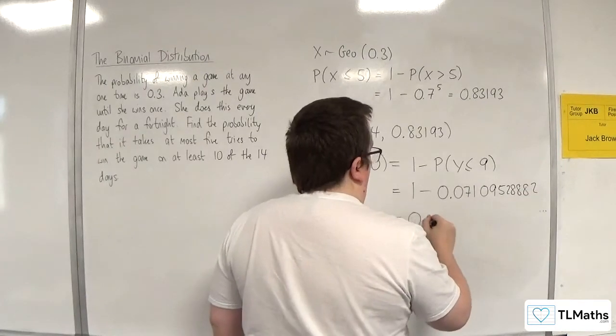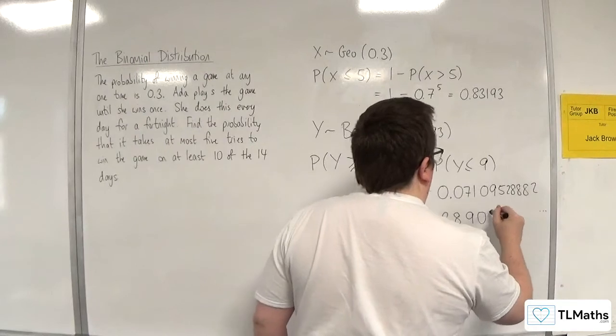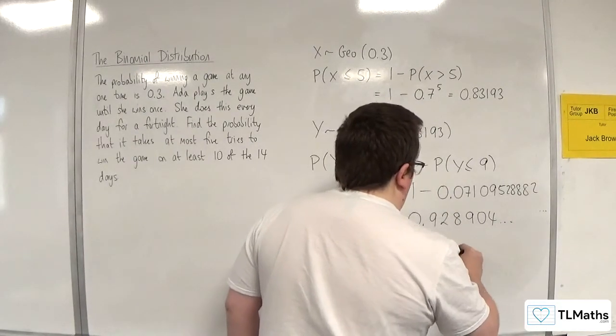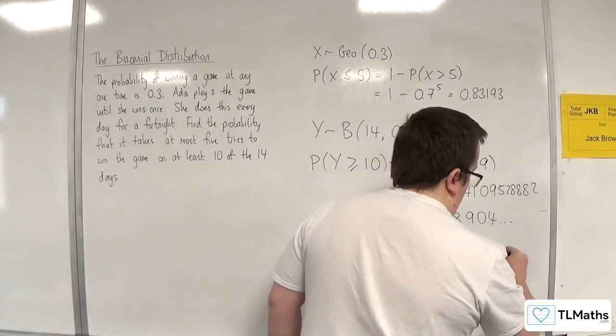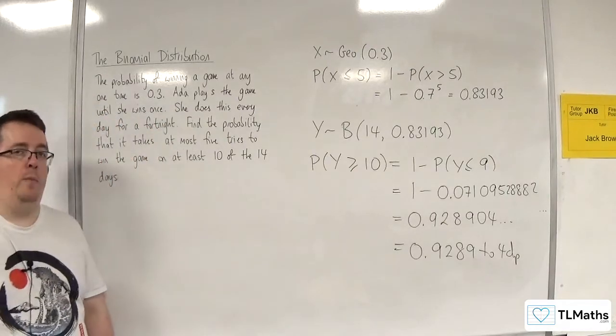So that's 0.928904, etc. 0.9289 to four decimal places. And that solves the problem.